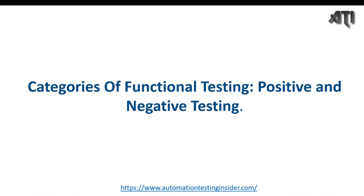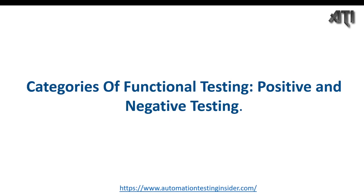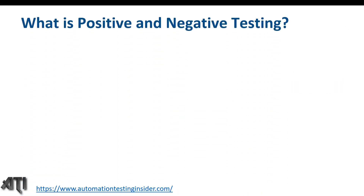Hello friends, welcome back to another video of Automation Testing Insider. Today I'm going to talk about the categories of functional testing. We have two types: positive testing and negative testing. Let's talk about what positive testing is, what negative testing is, and we will see the difference between them.